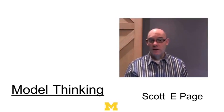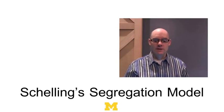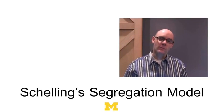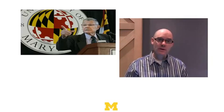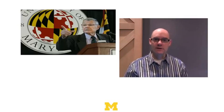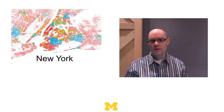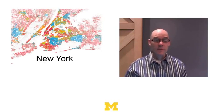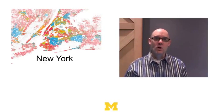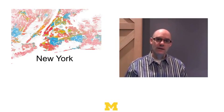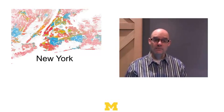In this lecture, we're going to talk about a famous model from social science known as Schelling's spatial segregation model. It was developed by Thomas Schelling, an economist at the University of Maryland. What Schelling was trying to do was understand an empirical phenomenon — segregation. He was interested in two types: racial segregation and segregation by income.